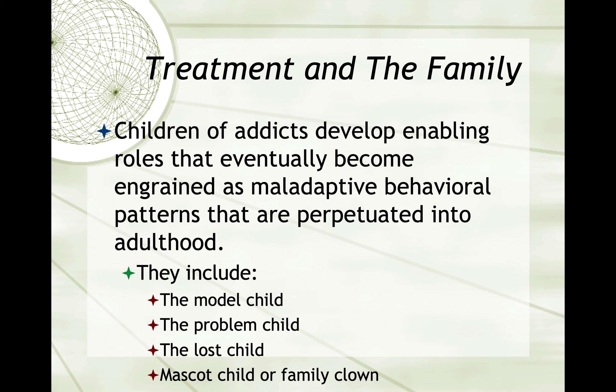If you know anybody who comes from an alcoholic family, you can actually identify these four different types of individuals. If there's more than one kid in the family, you'll have one of each — or maybe two model children, two lost children, or two problem children. Usually there's only one family mascot or family clown, and it tends to be the youngest individual in the family, but it doesn't have to be.